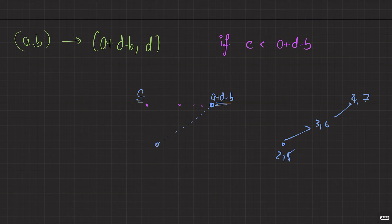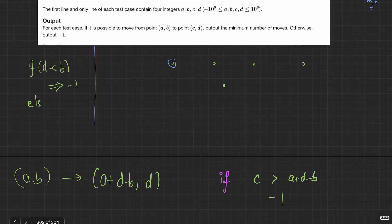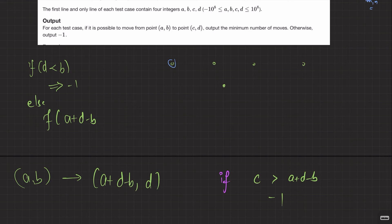So if c is greater than a + (d - b), you can never reach the destination — print -1. To clarify: a + (d - b) is your new x-coordinate once you've matched the height of the destination. If c exceeds this, it's impossible. Otherwise, you can always reach (c, d) from your new position by going left.